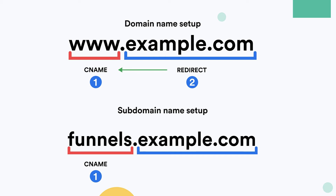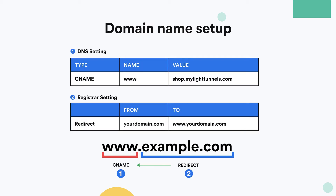To set up a subdomain — for example, funnels.example.com — the setup is even simpler. All you need to do is add a CNAME to your DNS settings with the name of the subdomain you want to use. For the main domain, your settings will look like this: a DNS record with type CNAME, the name www, and the value shop.mylightfunnels.com.